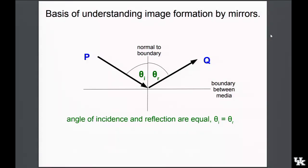For images formed by mirrors, everything is based on the law of reflection. Reflection occurs when light strikes a boundary between two optical materials. The law of reflection says that the reflected angle of the outgoing light ray is equal to the incident angle of the incoming light ray. All our work on mirrors — all our equations, all our diagramming — is going to be based on this one simple law.